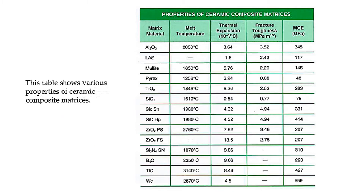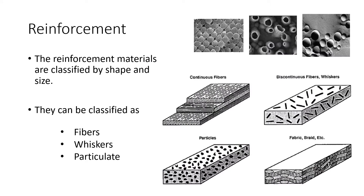You don't need to remember everything, but you need to know how to read the table — according to the data, where they are, how many are in the middle, how many are on the sides, and how many are in the right and left tails. Reinforcement is another part of your composite — reinforcement material is classified by shape and size: fibers, whiskers, and particulates.